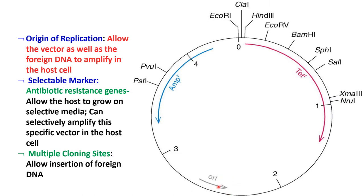The origin of replication site allows the vector as well as the foreign DNA to amplify in the host cell. The selectable markers are usually antibiotic resistance genes like ampicillin resistance or tetracycline resistance genes, which allow the host to grow on selective media. Transformants carrying these antibiotic resistance genes can survive on selective media. There is also a multiple cloning site which allows foreign DNA to be inserted into the vector.